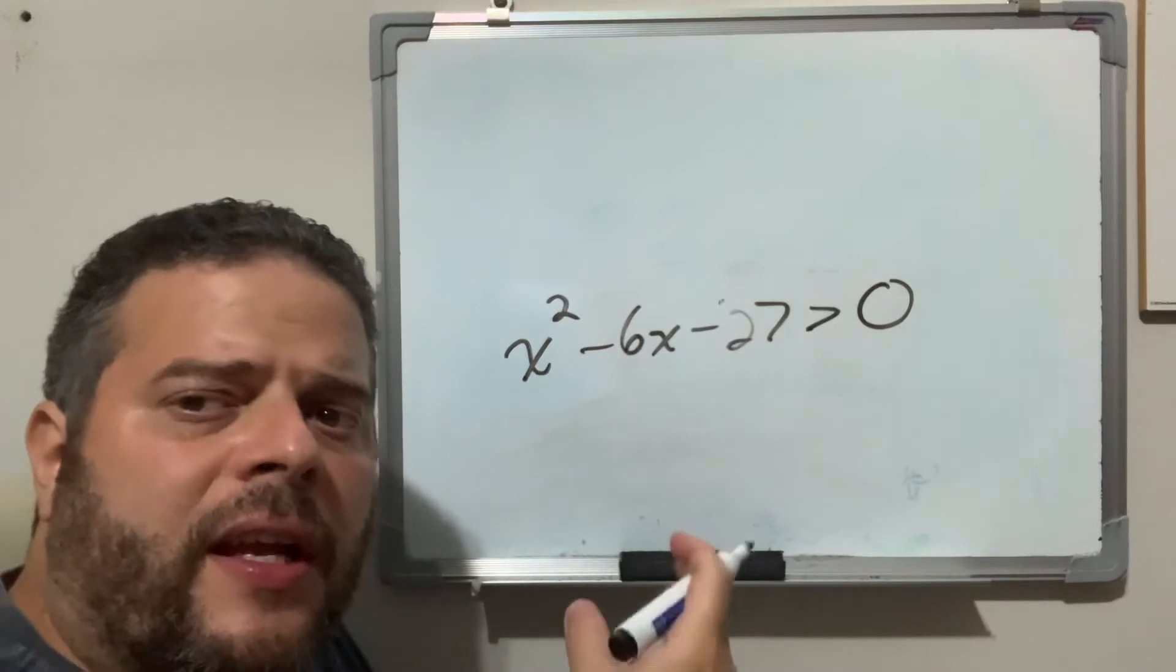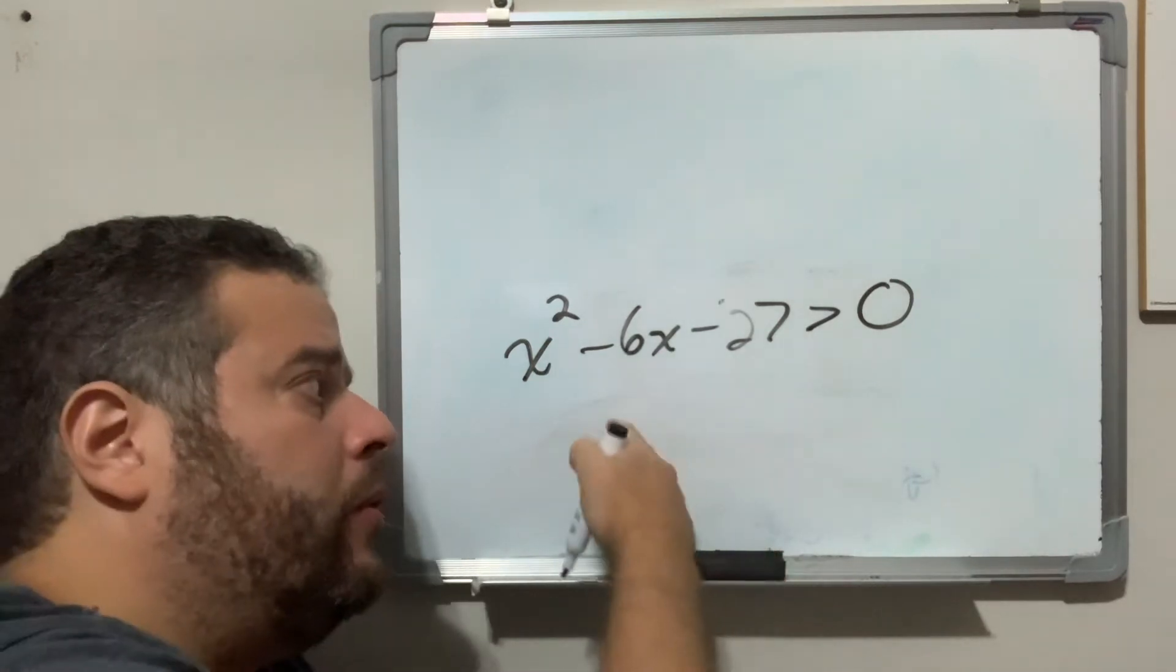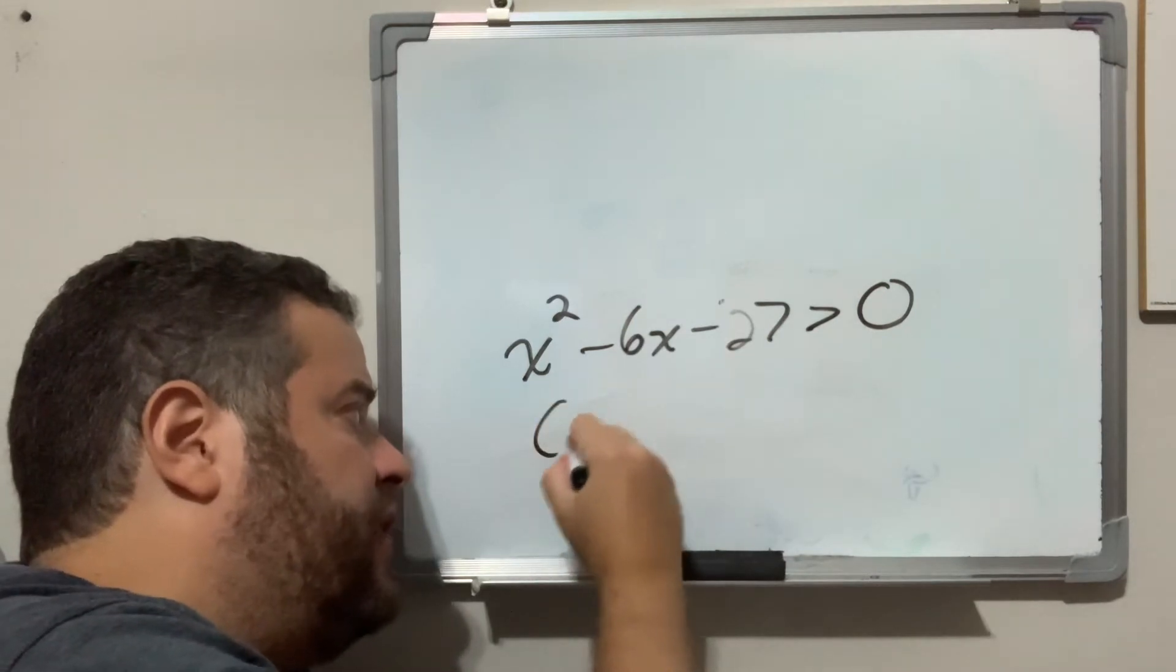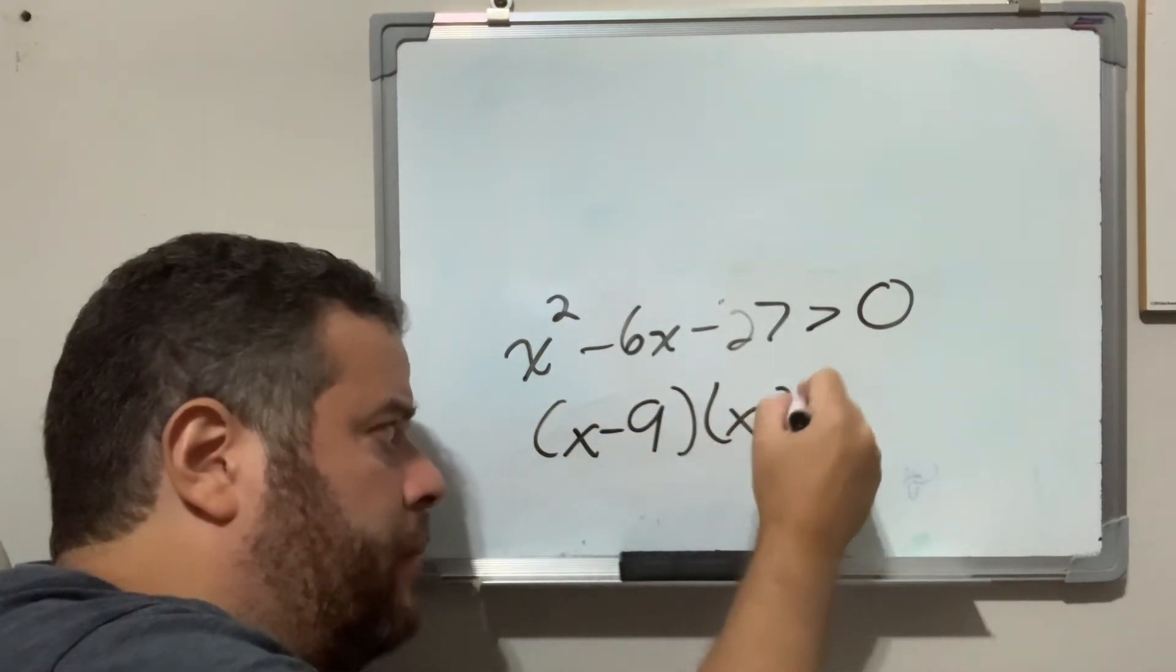Now, the process for an inequality is more or less the same. We try to find the zeros, and in this case, nothing's changed: x minus 9, x plus 3.